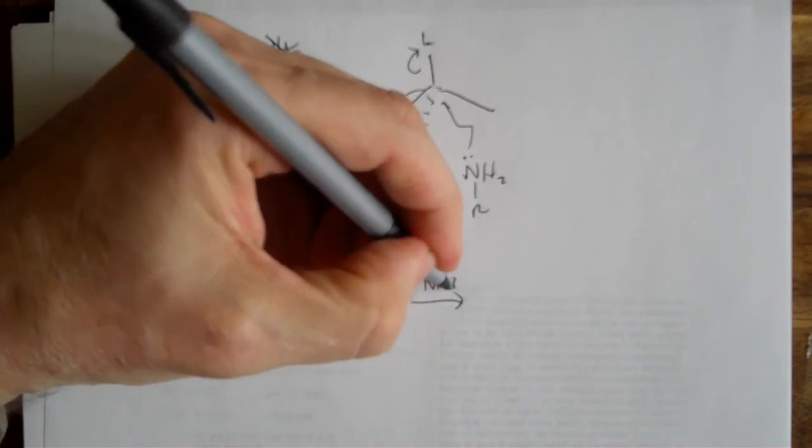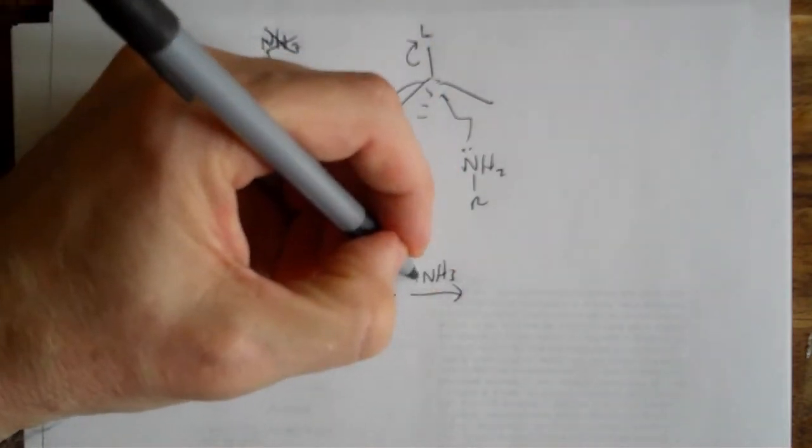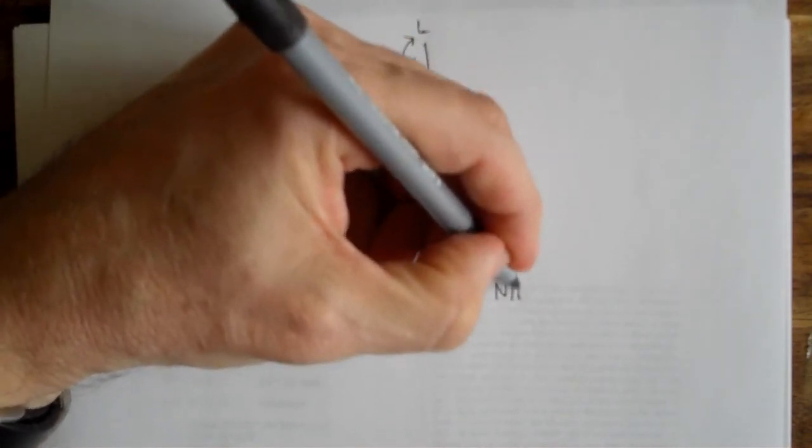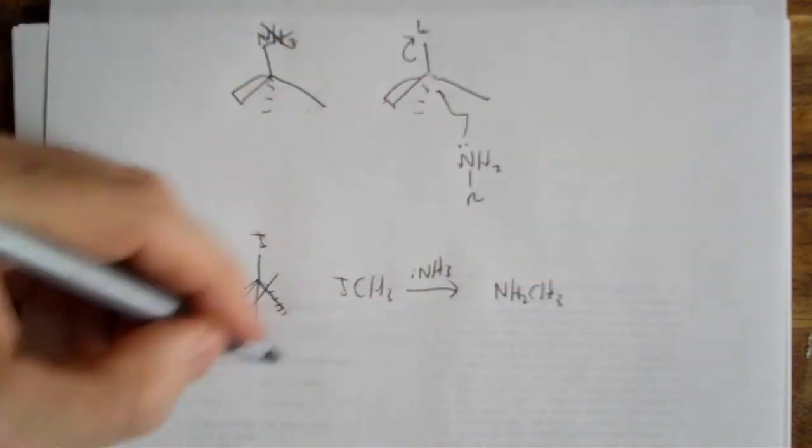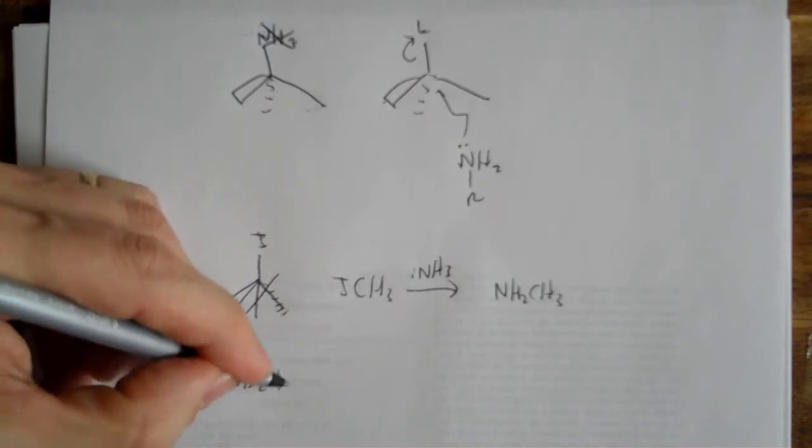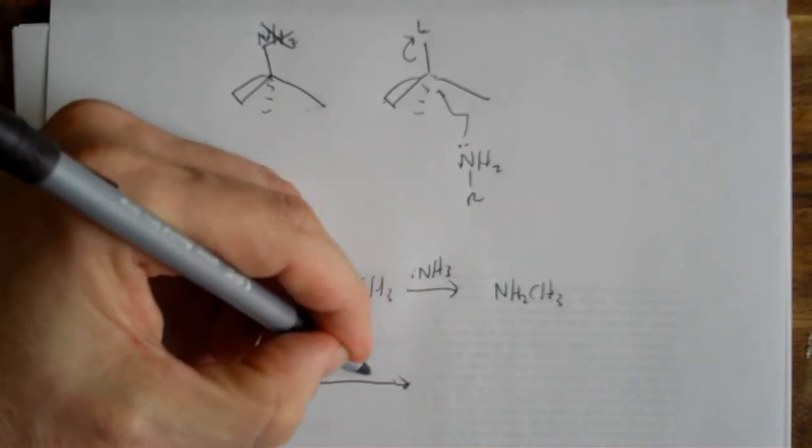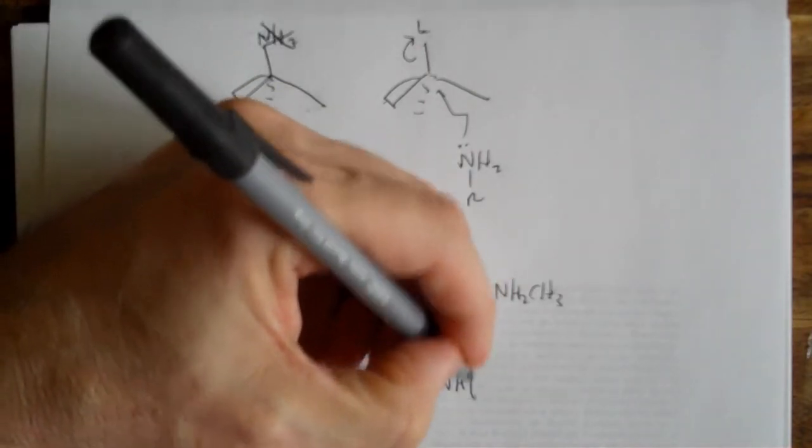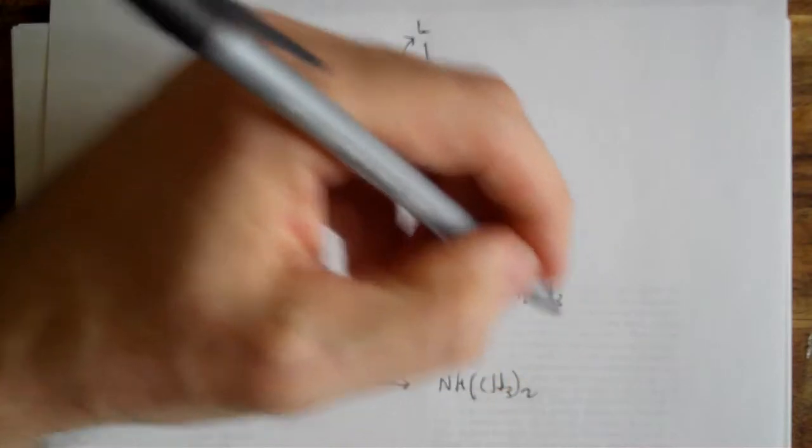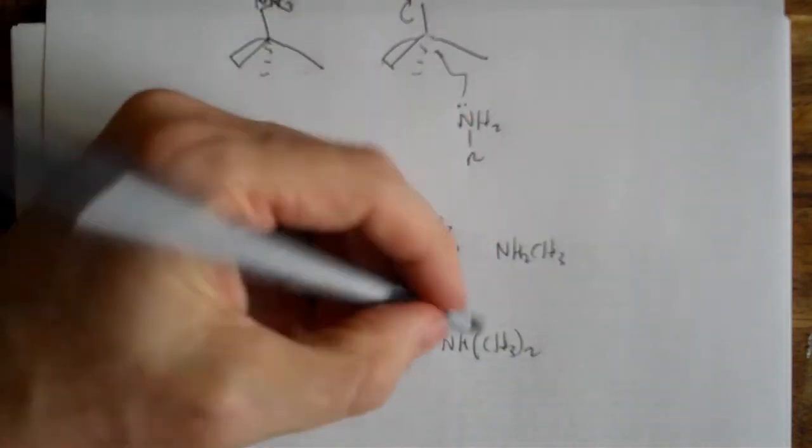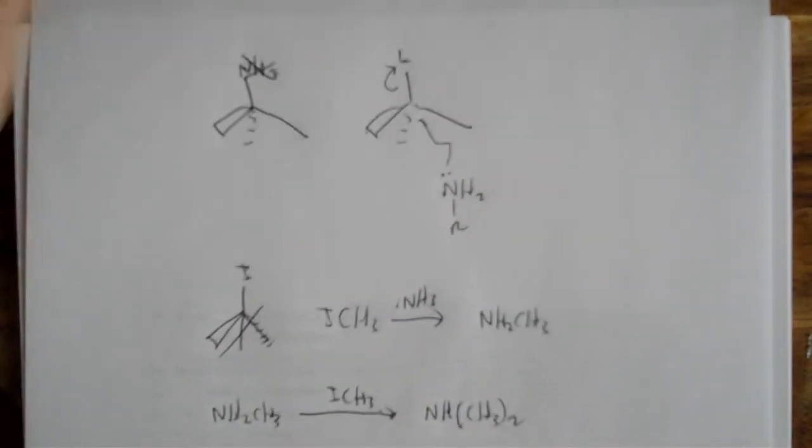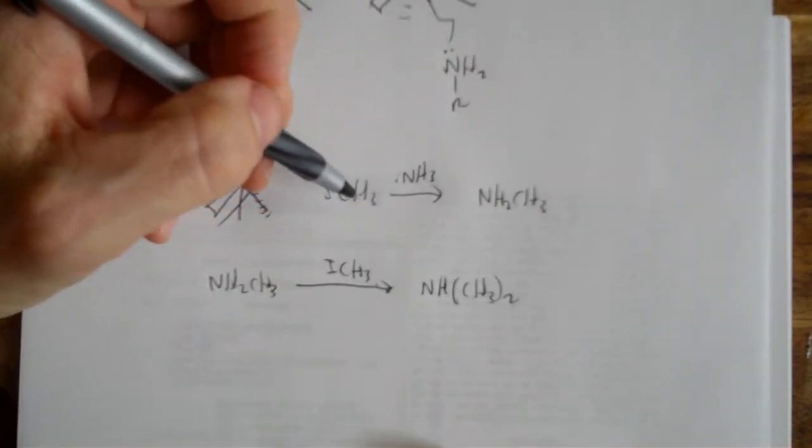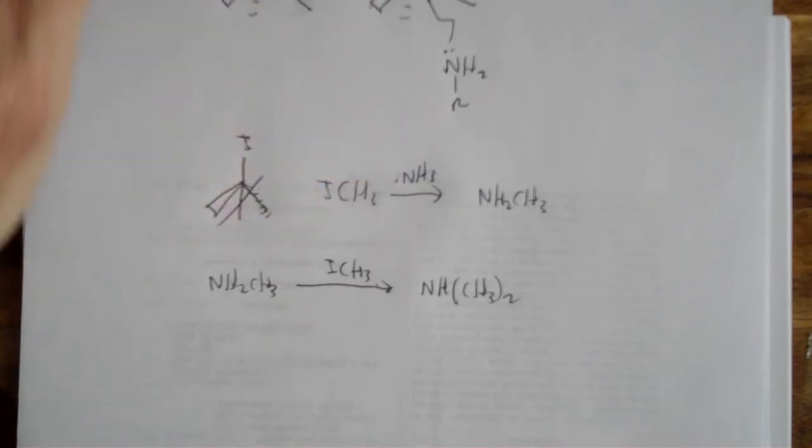I don't think she ever comes out in the book and says this. That plus NH3 is going to give you NH2CH3. You can take ammonia and treat it with methyl iodide and you get methyl amine.